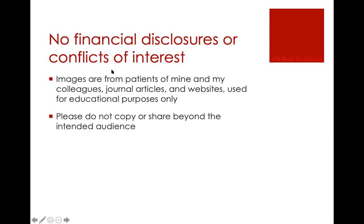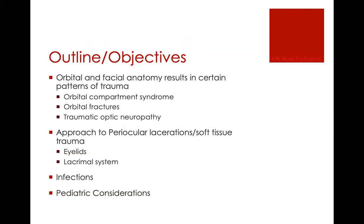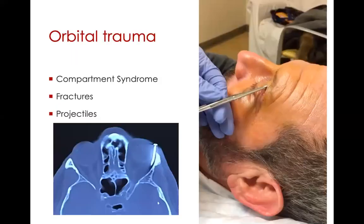I have no disclosures relevant to this talk. We're going to go over orbital and facial anatomy and how that results in certain patterns of trauma, talking first about orbital fractures and traumatic optic neuropathy. Then we'll talk about periorbital trauma with lacerations of soft tissue, eyelids, and adnexa. Then we'll go through infections and some pediatric considerations if we have time.